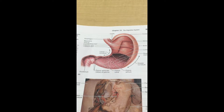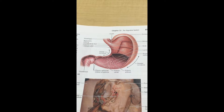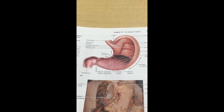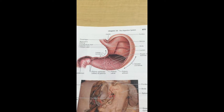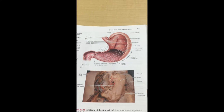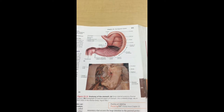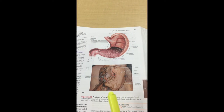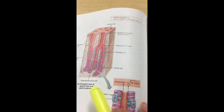The histology of the stomach is lined with mucus cells. These mucus cells are also lined with gastric pits, which are depressions or glands that lead to gastric glands.